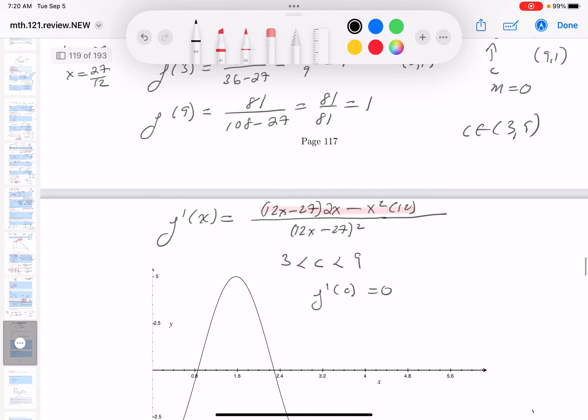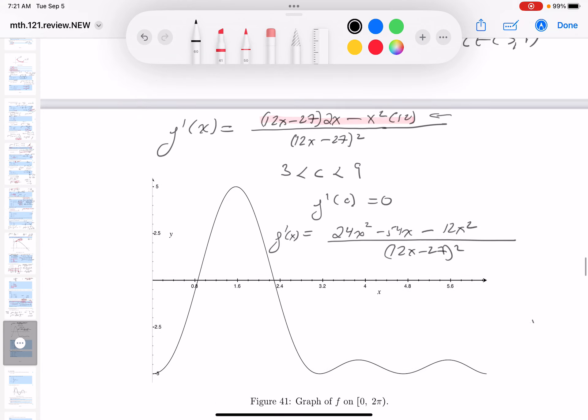So let's look at it. The only thing I have to worry about is when does the top become 0? So I'm going to write it down. So the top, this is the top over here. When does it become 0? Well, it's going to be 24x squared. I'm just simplifying the top, by the way. This is f prime. Let me put the 12x minus 27 in the bottom again. And then you get minus 54x, and then minus 12x squared.